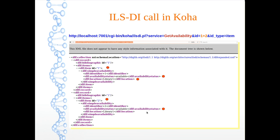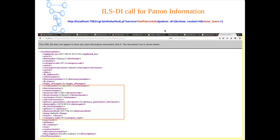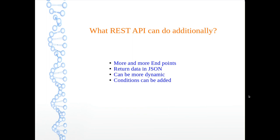Similarly, we can get different kinds of patron information using ILSDI — through this call I can generate patron-related information like username, date of expiry, and many other things. Additionally, what REST API can do in comparison with ILSDI: more and more endpoints are possible, it can return data in JSON format, and it can be more dynamic — more conditions can be added.